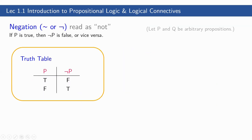Let us discuss the first operation: negation. It is read as 'not.' If P is true, then not P is false, or vice versa. They cannot be true at the same time. This is the truth table for negation: if the original statement is true, then its negation is false; but if the proposition is false, then its negation is true.